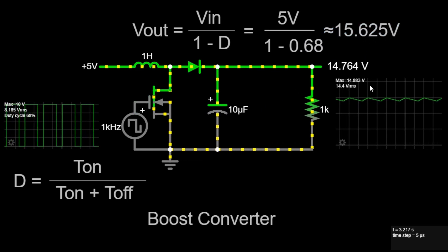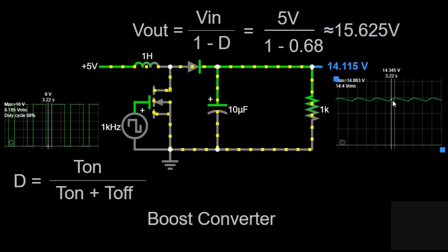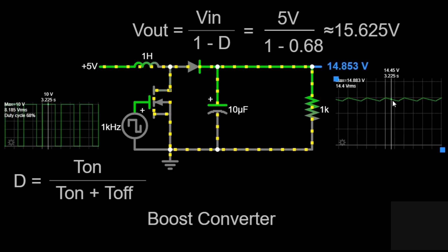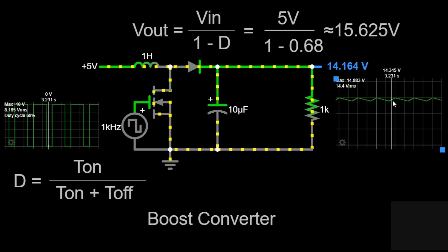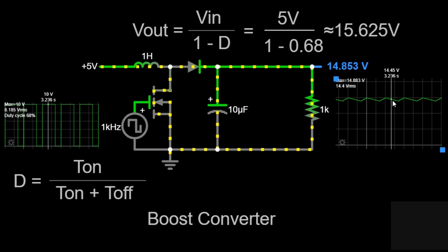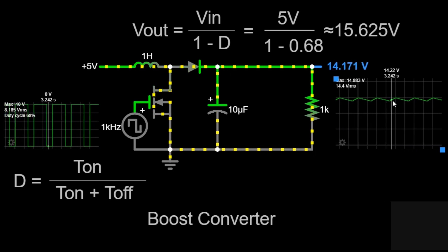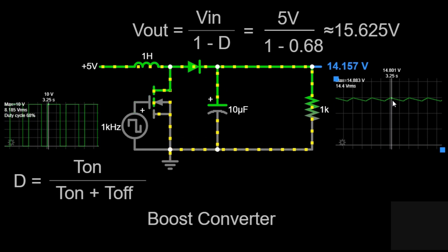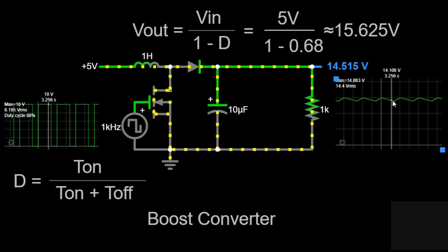The output ripple voltage can be approximated using the formula: V ripple equals V in times D divided by F times L. This formula gives an estimate of the voltage ripple based on the input voltage, duty cycle, switching frequency, and inductance.